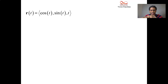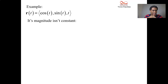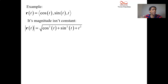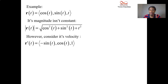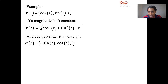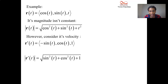Here's an example — the position function for a helix. Its magnitude is not constant. If you look at its magnitude, you get cosine squared plus sine squared plus t squared all under the radical, and that's the square root of one plus t squared. But if you look at the velocity: negative sine t is the derivative of cosine, cosine t is the derivative of sine, and t's derivative is one. The magnitude of velocity gives sine squared plus cosine squared plus one, which equals the square root of two.